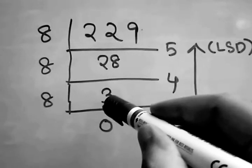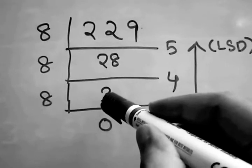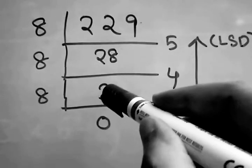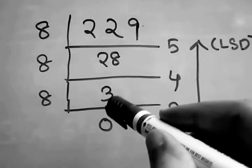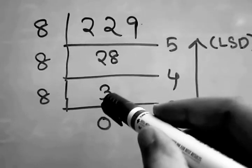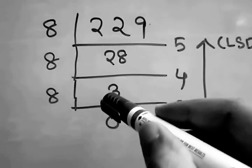Now this 3 is the recent quotient, so this quotient will become the new dividend for the next division.